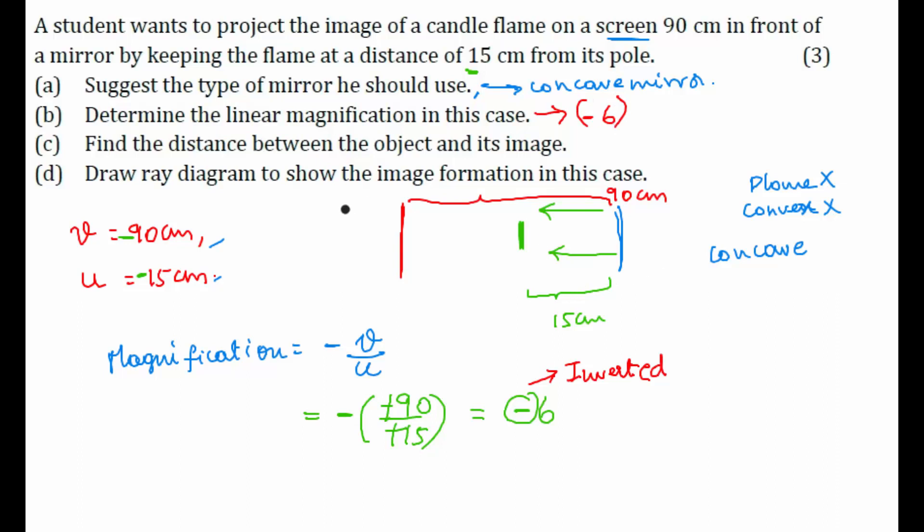Third question. Find the distance between the object and its image. So, here we have our object. Here we have our image. We need to find out this distance. We can clearly see that this distance is equal to 15 cm and this entire distance is equal to 90 cm. So, distance between the object and its image will be how much? 90 minus 15 which is 75 cm.